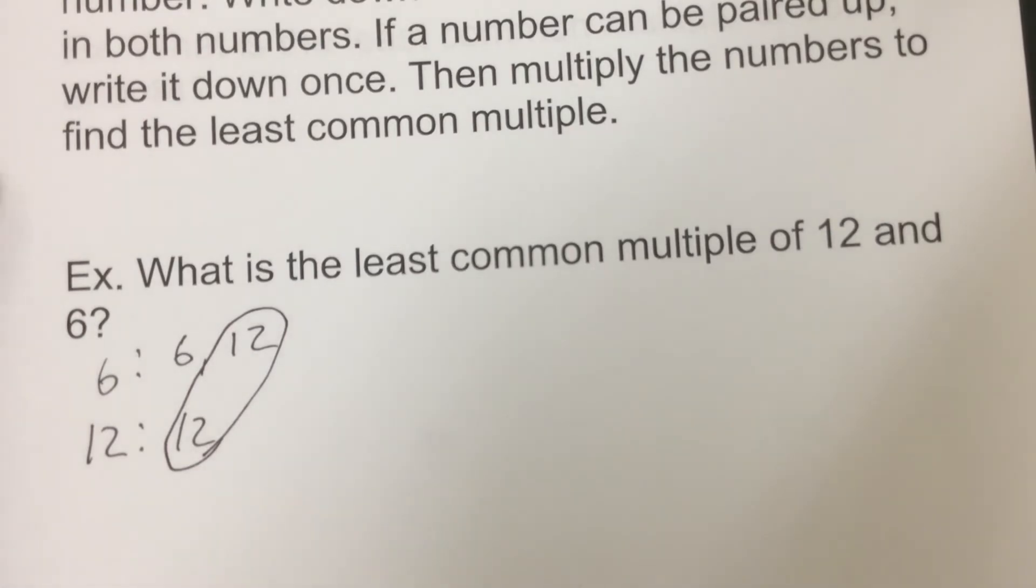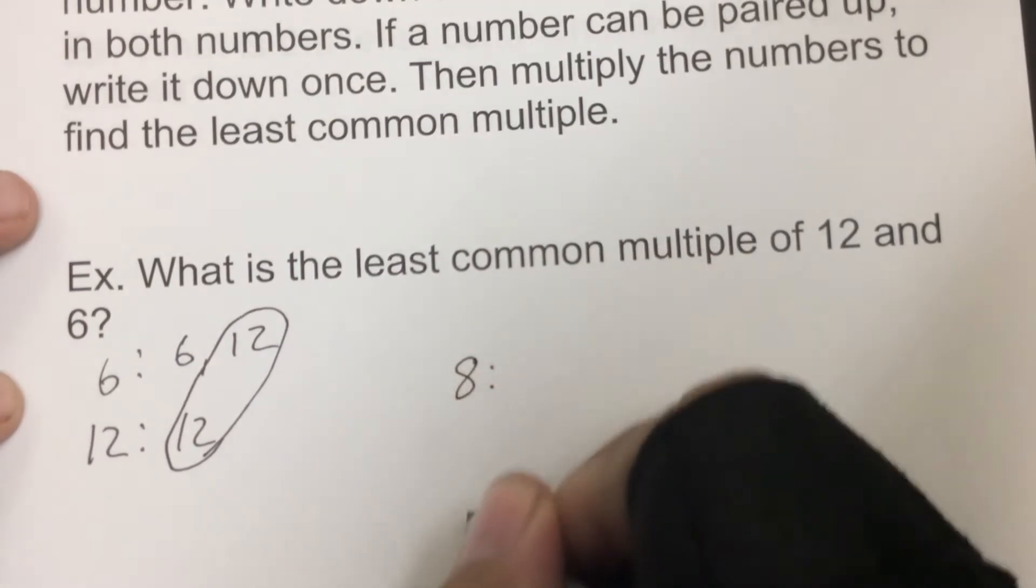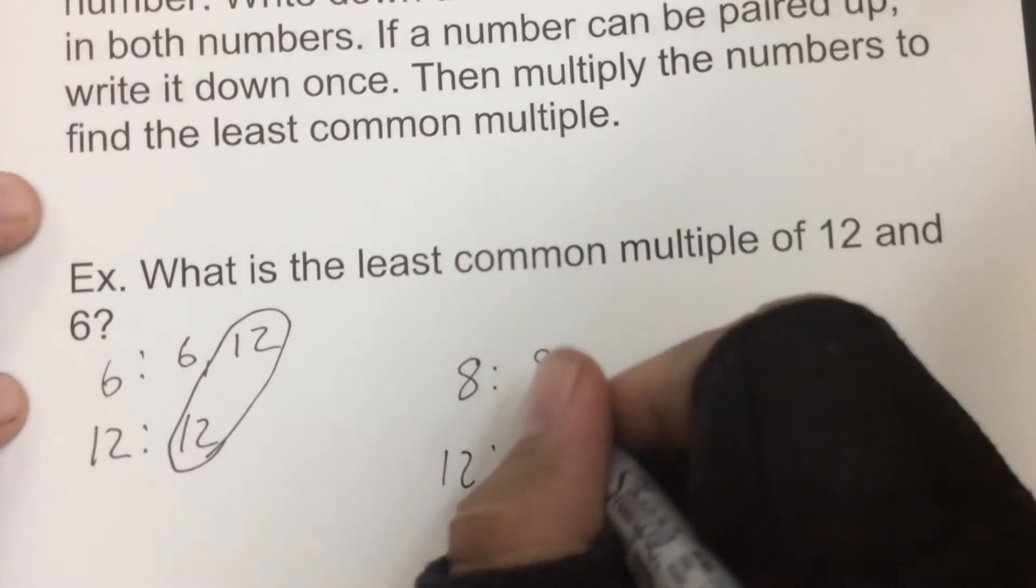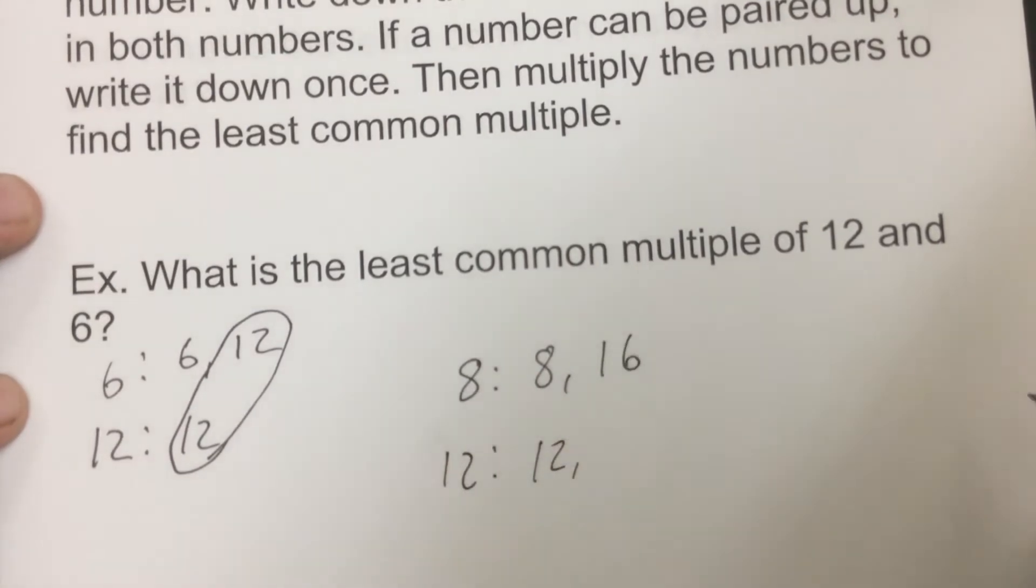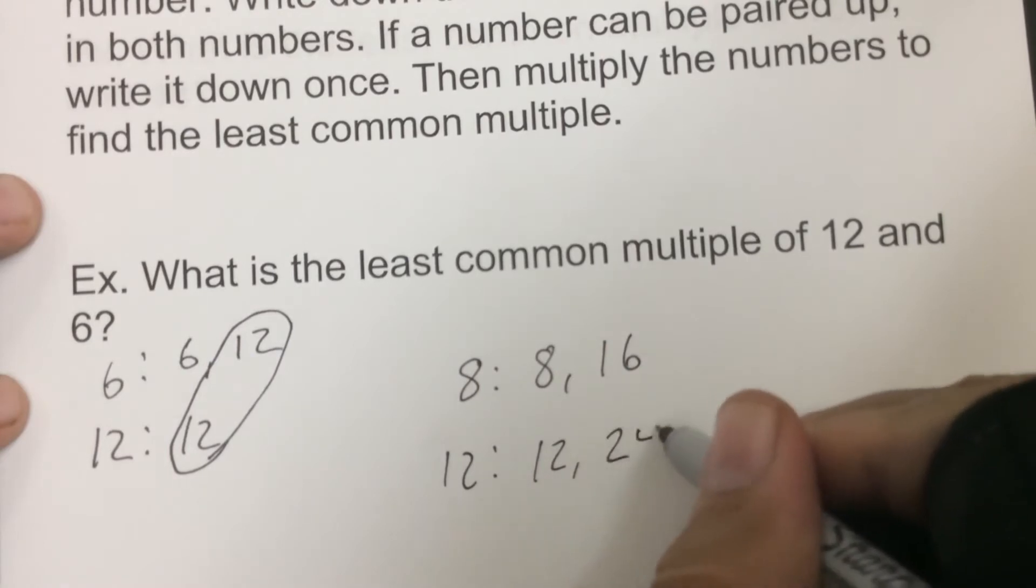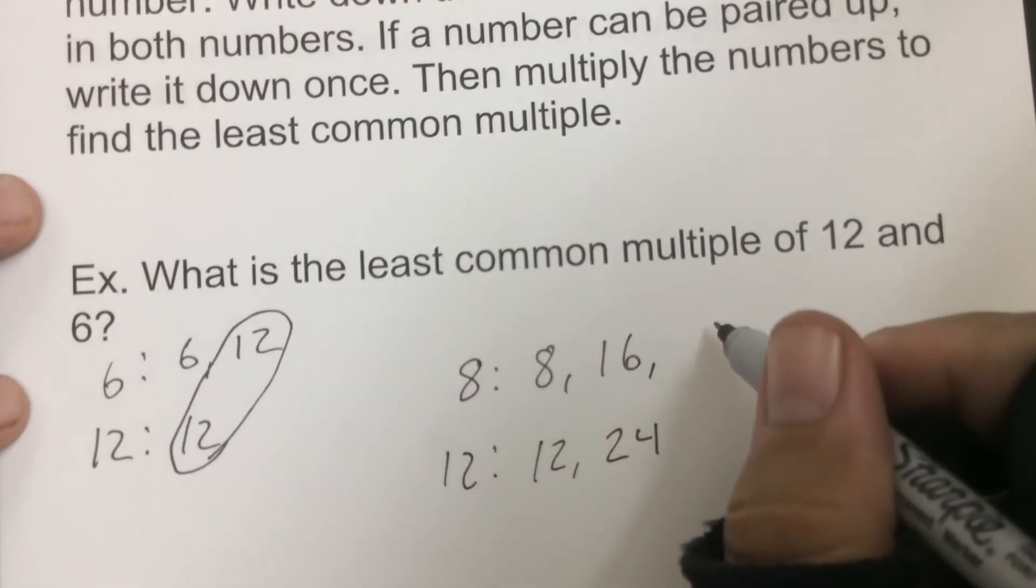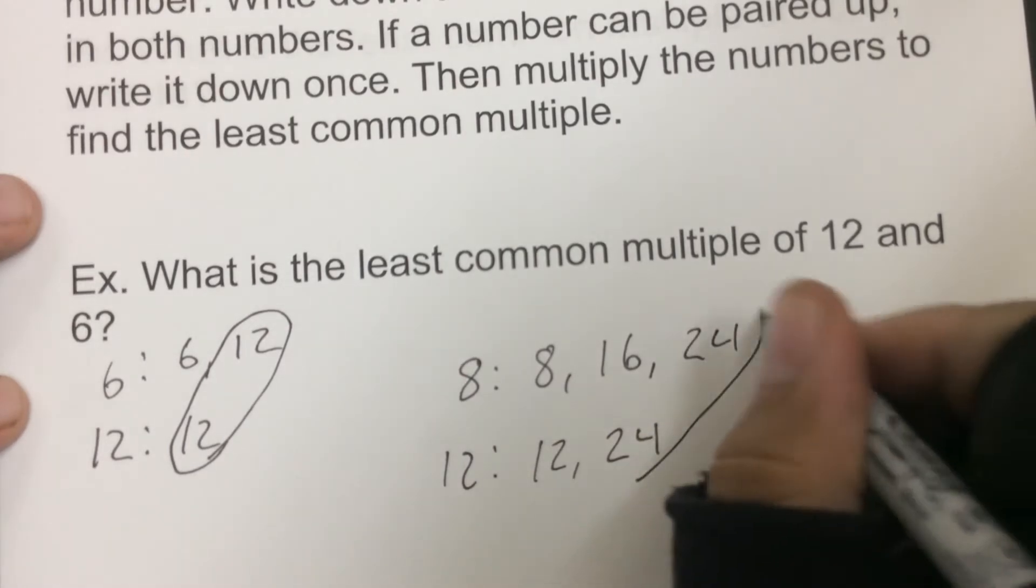If we would keep going, let's say if we did 8 and 12, first ones would be 8 and 12. So then we go to the next one with here, so 16. Well that doesn't match. So we find another one with the big one, 24. So we find the next multiple of 8. So 8, 16, 24. Now we've got it. So now we stop.